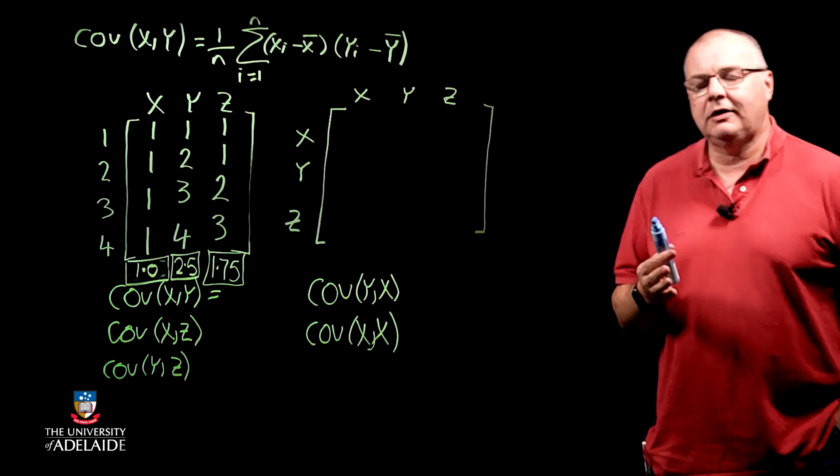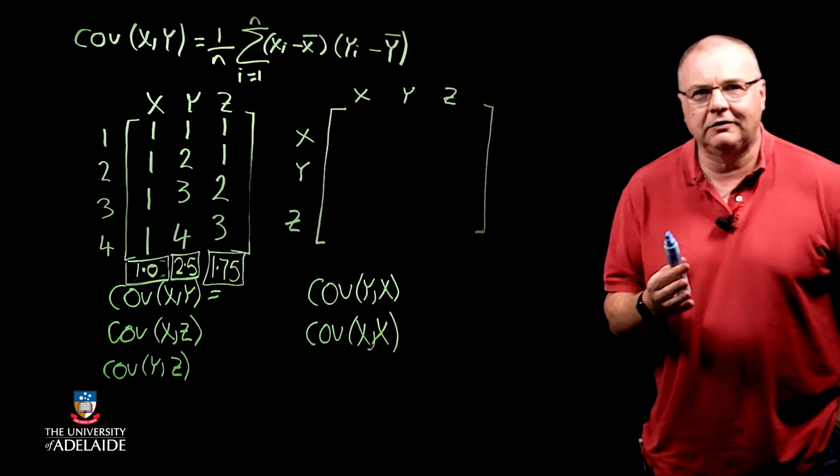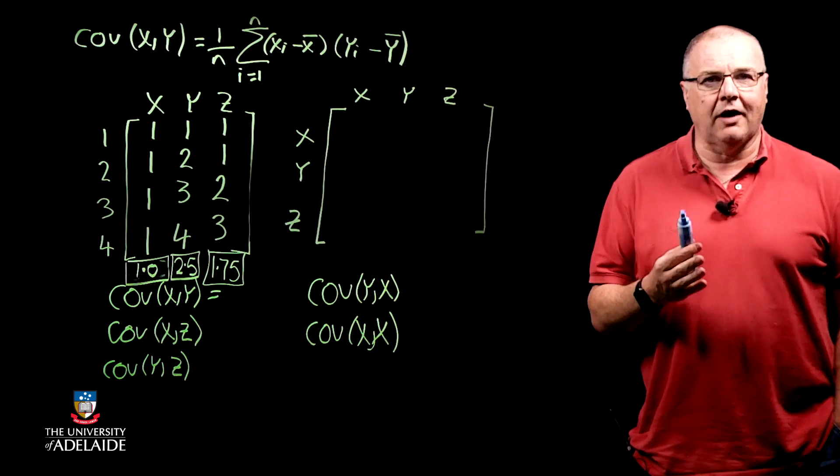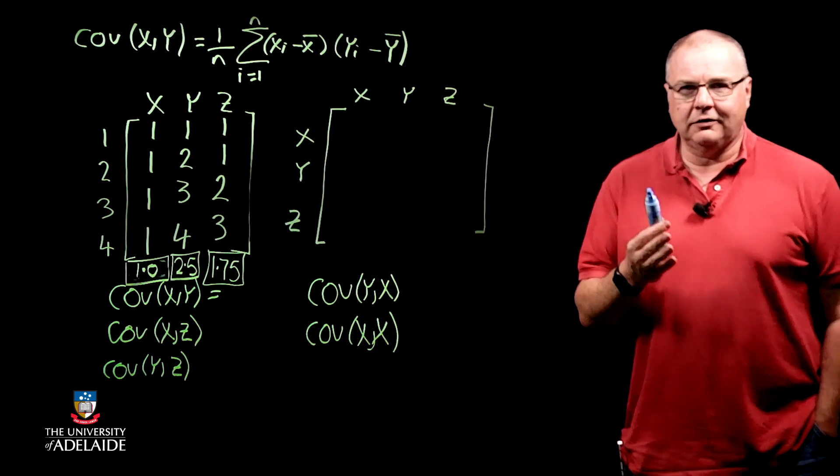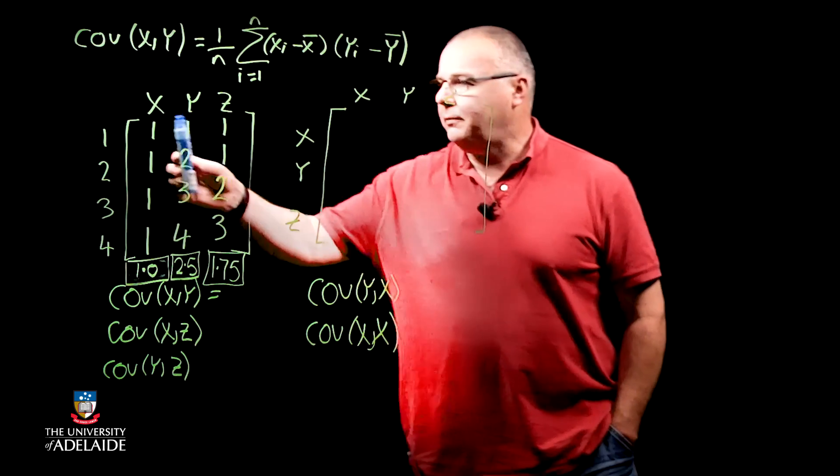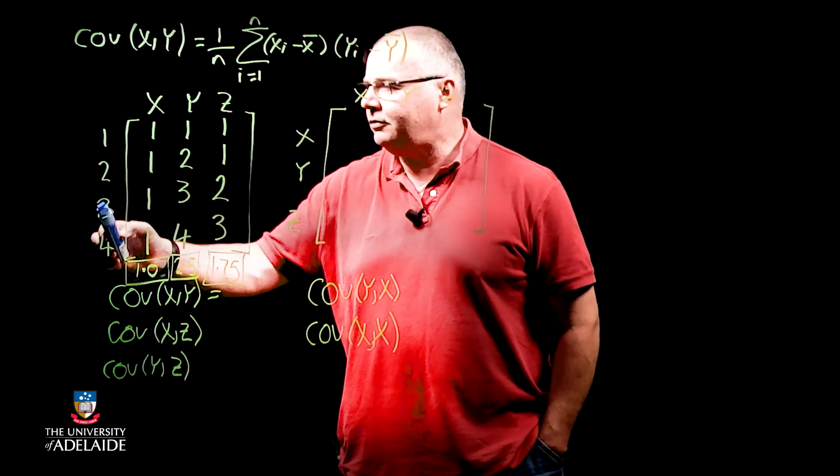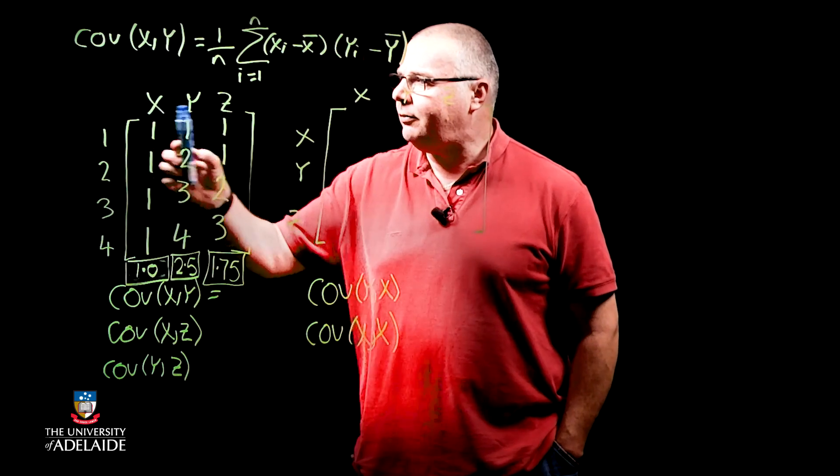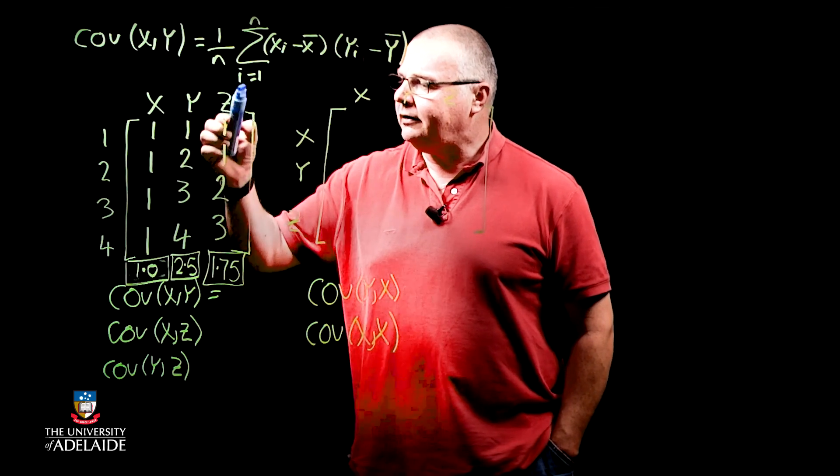So the next concept we're going to need to understand the foundations of PCA is the variance covariance matrix. And to understand that, we're going to have a look at a nice simple data set. So here is my data. I've got one, two, three, four subjects and three variables denoted x, y and z.